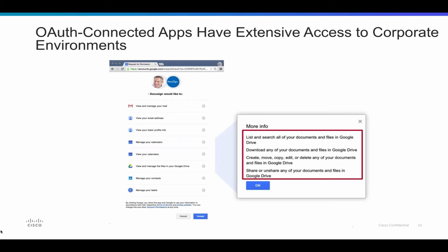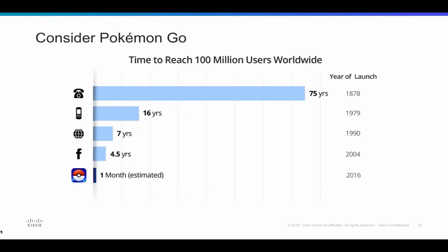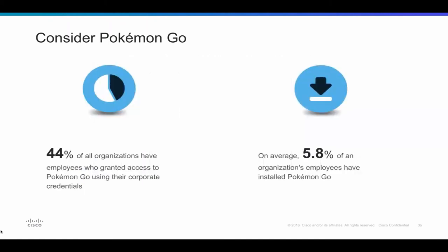People typically haven't thought of third-party apps as a threat vector, but it's all too easy because each one of your users is capable of endowing these third-party apps with an excessive set of permissions. Looking at the example of Pokemon Go: the time to reach 100 million users worldwide — the telephone took over 75 years, Facebook four and a half years, but Pokemon Go took just one month. It's astonishing how quickly these applications can be adopted. In fact, 44% of all organizations have employees who granted access to Pokemon Go using corporate credentials.